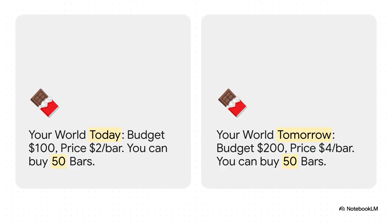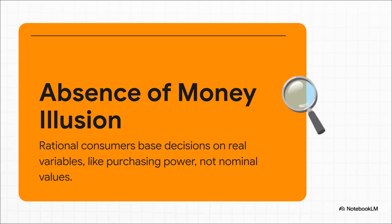Let's use a simple story to see what it means. Imagine you've got $100 to spend on chocolate bars for the week, and they're $2 each. You can buy 50 bars. Now let's say tomorrow your chocolate budget doubles to $200 — awesome, right? But the price of a chocolate bar has also doubled to $4. So how many can you actually buy? Still 50. The numbers got bigger, but your real purchasing power — the actual amount of chocolate you can enjoy — hasn't changed one bit. You're not actually any richer, so why would you change how many you buy? That's the whole idea of absence of money illusion.